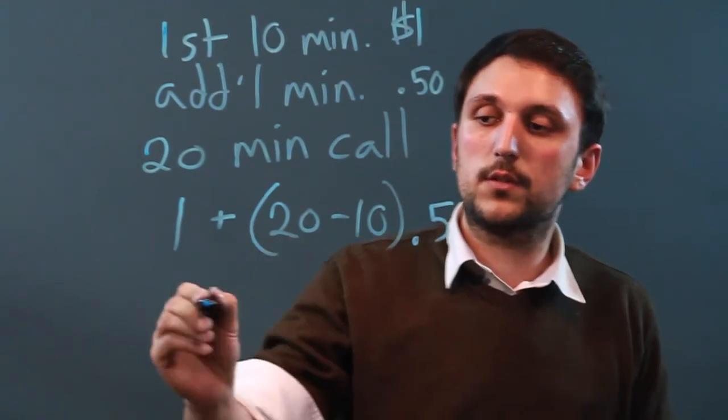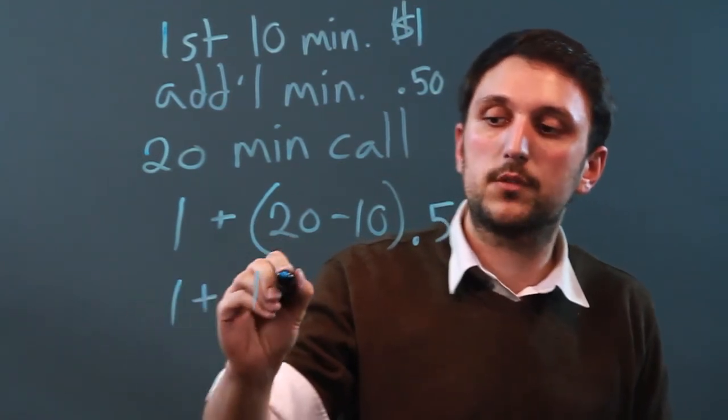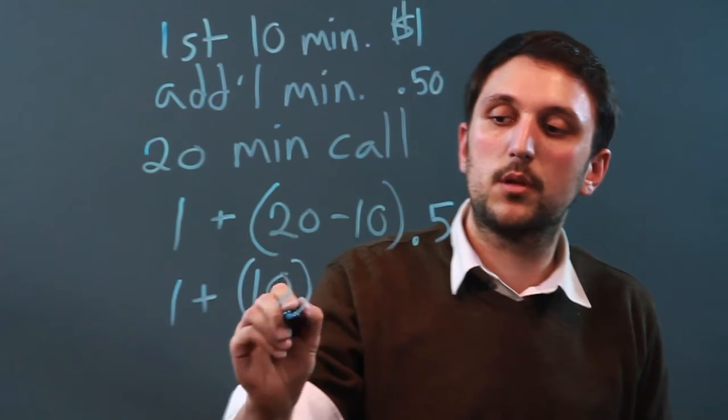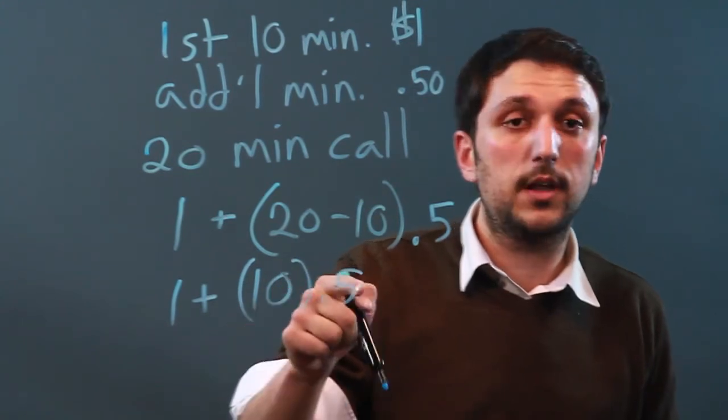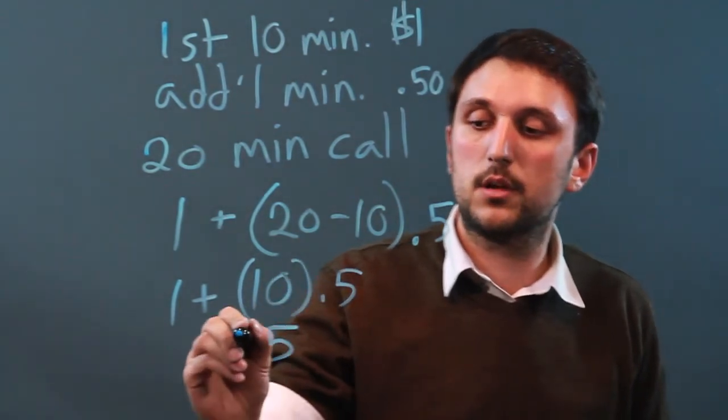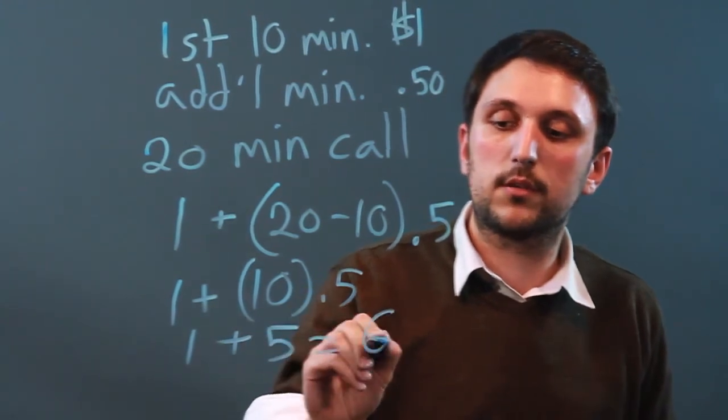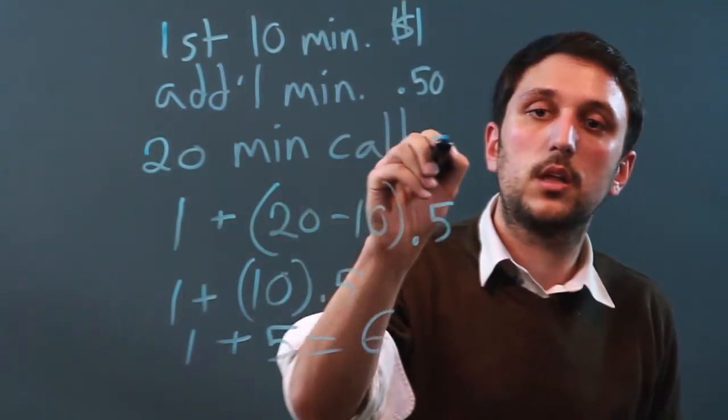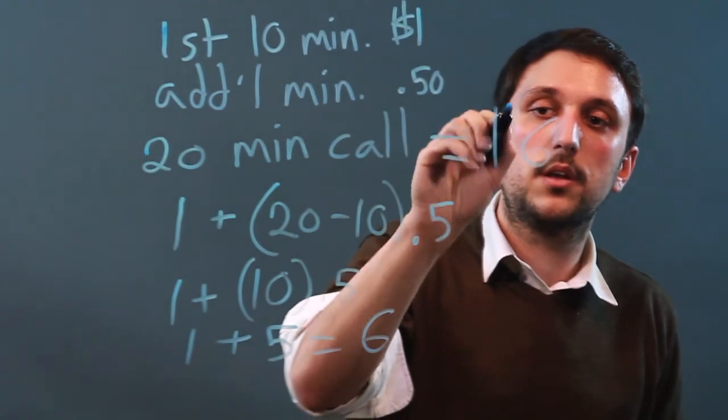So twenty minus ten is ten. So one plus ten times point five. Ten times point five is five, plus one equals six. So a twenty minute call equals six dollars.